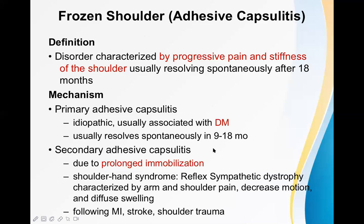Regarding the mechanism of frozen shoulder, the first type is primary adhesive capsulitis, also known as an idiopathic condition. A common association is diabetes mellitus, though we do not really know the explanation. It usually resolves spontaneously in around 9 to 18 months — it may resolve as early as 9 months. This is the idiopathic variety, common in diabetes, known as primary adhesive capsulitis.